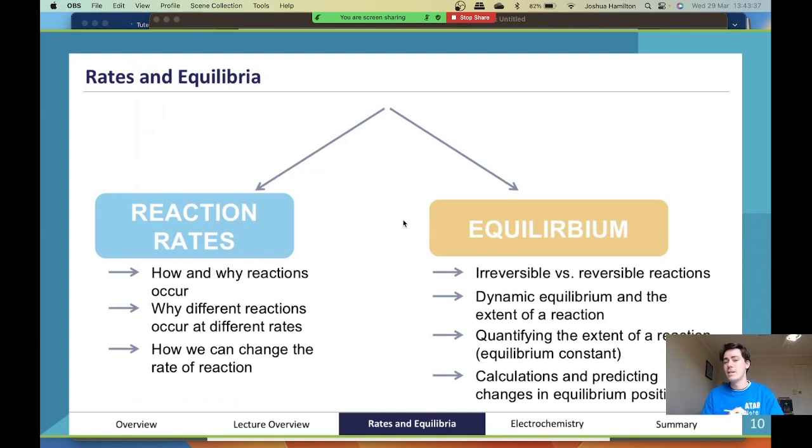Equilibrium is a little bit different. Equilibrium is where we talk about irreversible versus reversible, we talk about dynamic equilibriums—like why does the equilibrium, why do the reactions keep occurring but nothing looks like it's happening? Quantifying and then calculations.